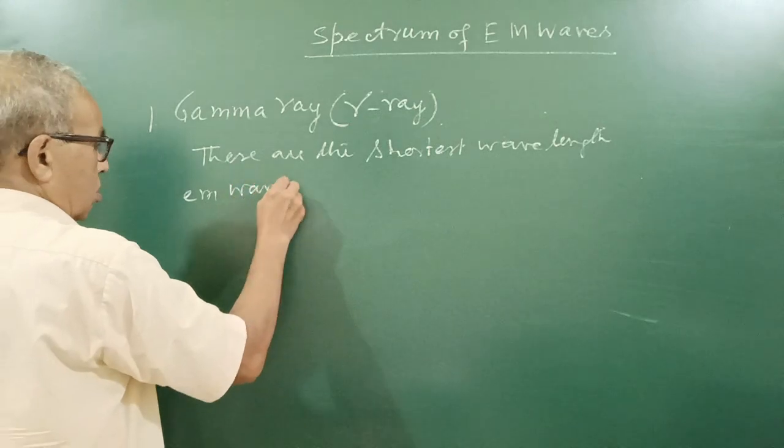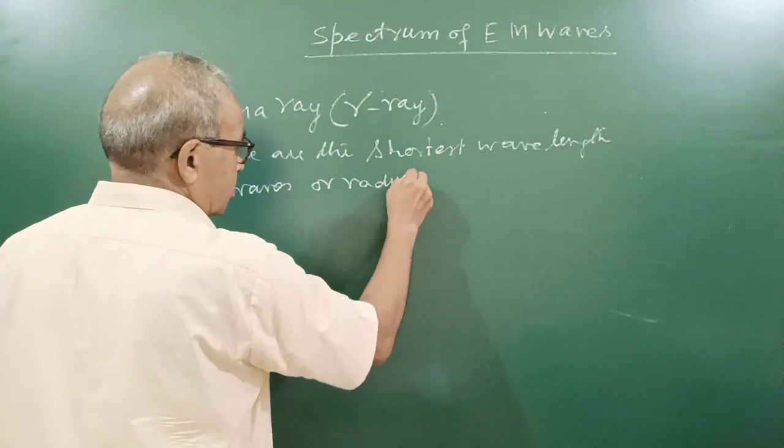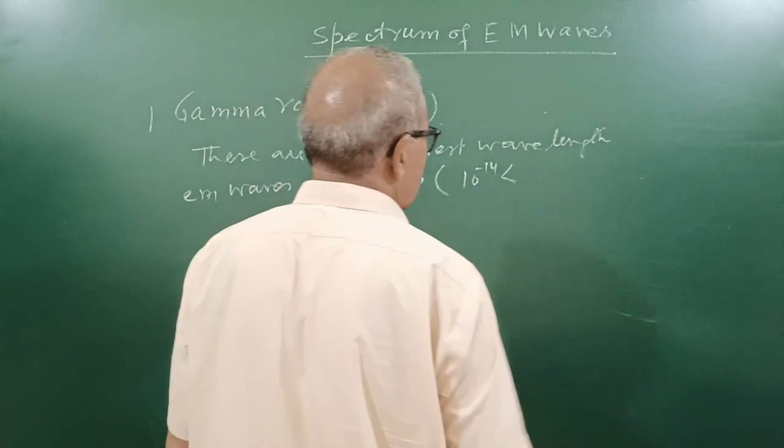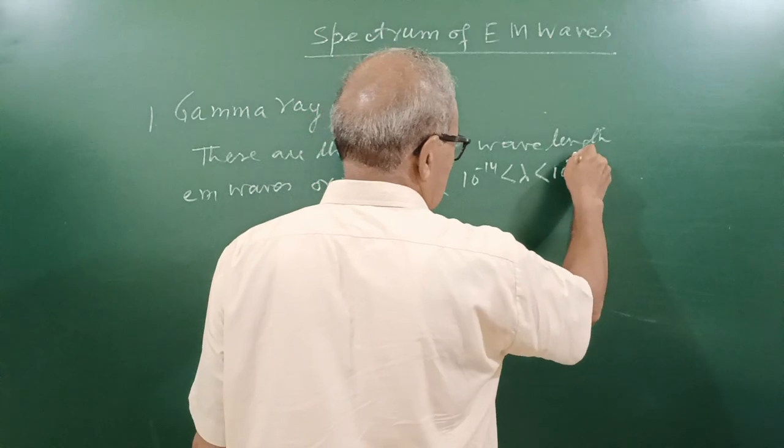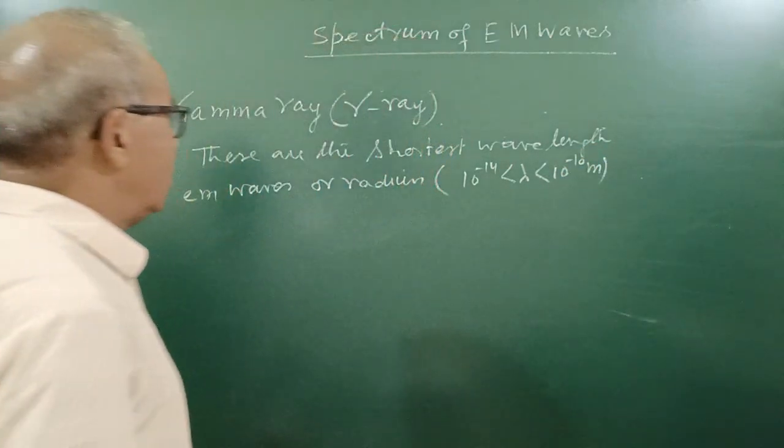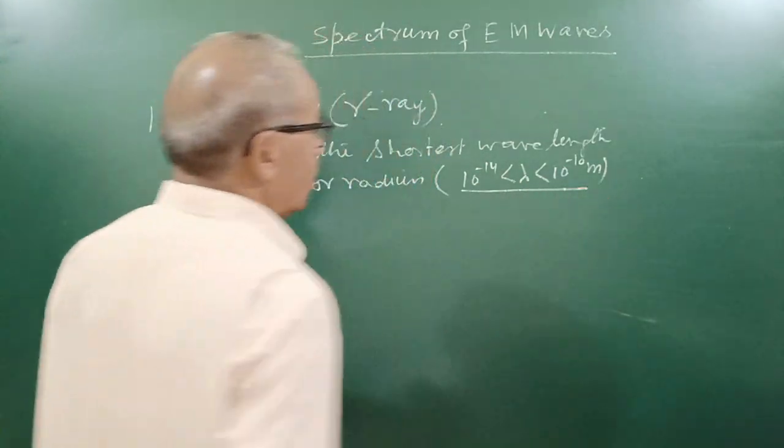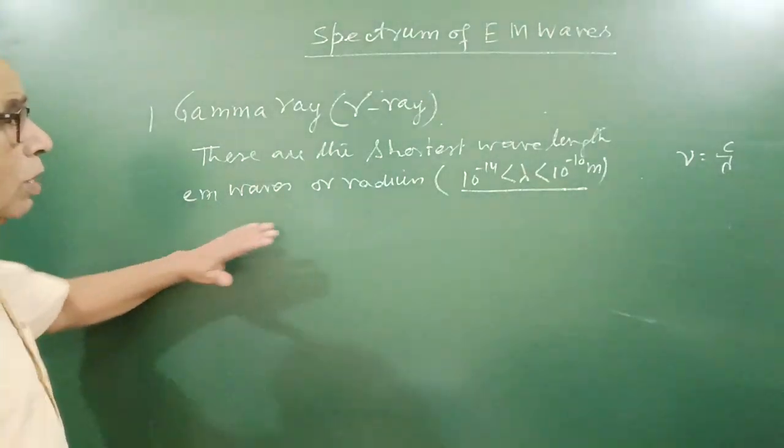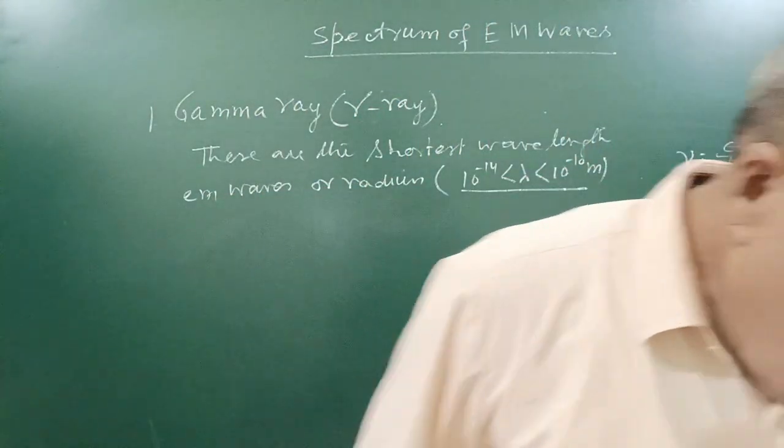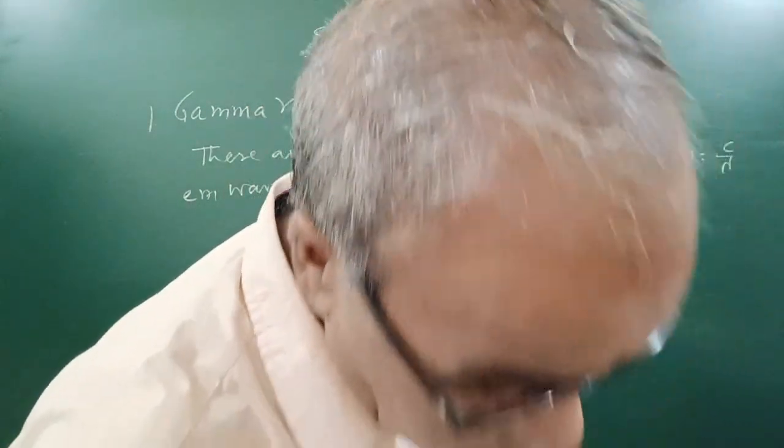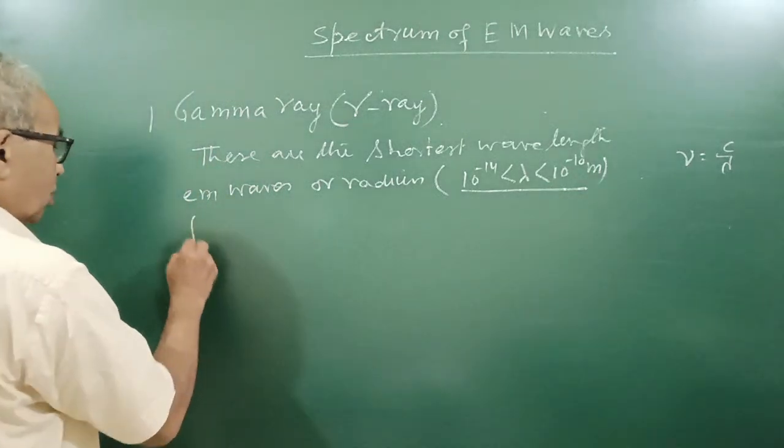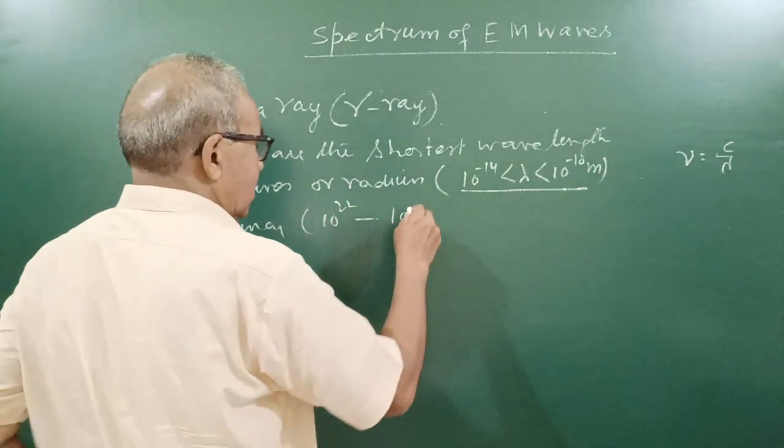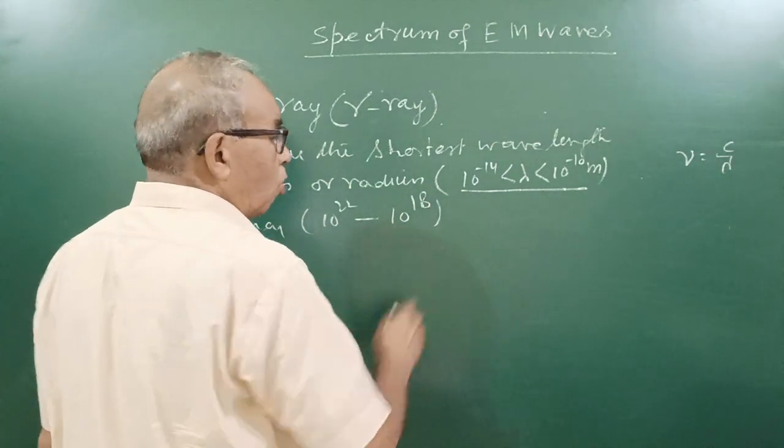The wavelength varies from 10 to the power of minus 14, lambda less than 10 to the power of minus 10 meter. You can find out frequency corresponding to wavelength, nu equals c by lambda. Frequency range varies from 10 to power 22 to 10 to power 18 hertz.